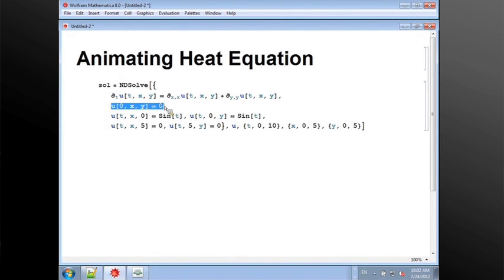Initial condition, everything is zero. The boundary condition in two sides, it's just a fake example. I used sine t, let's say a fluctuating temperature outside. The other word, temperature is zero. And u is our function. The time is between 0 to 10. And the area of our computation is x and y between 0 to 5.